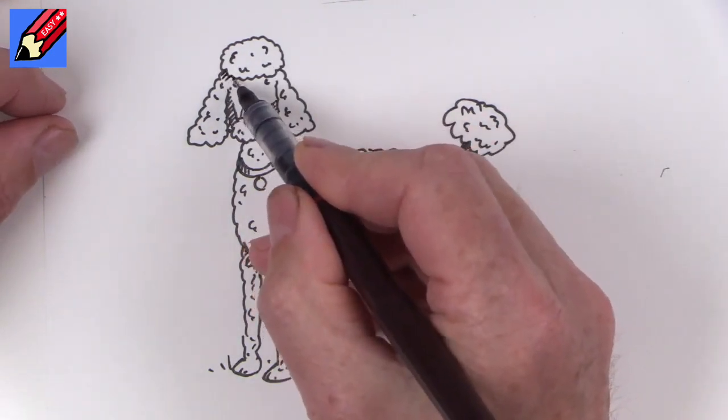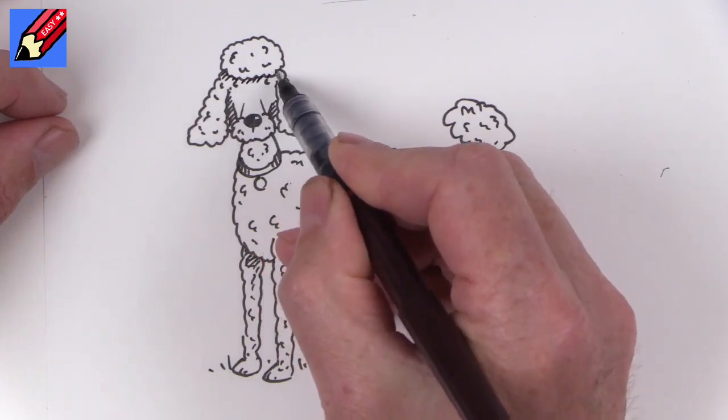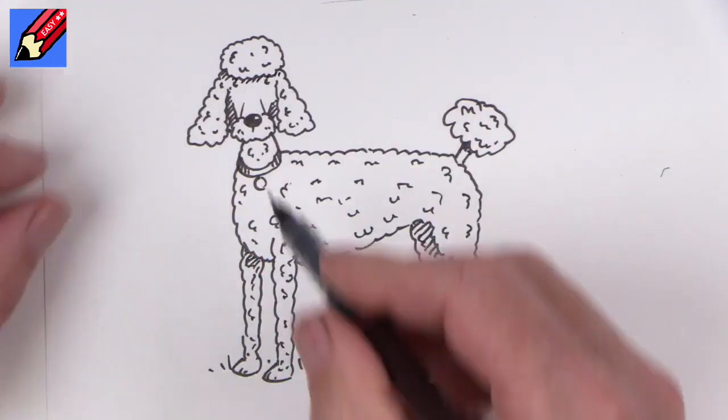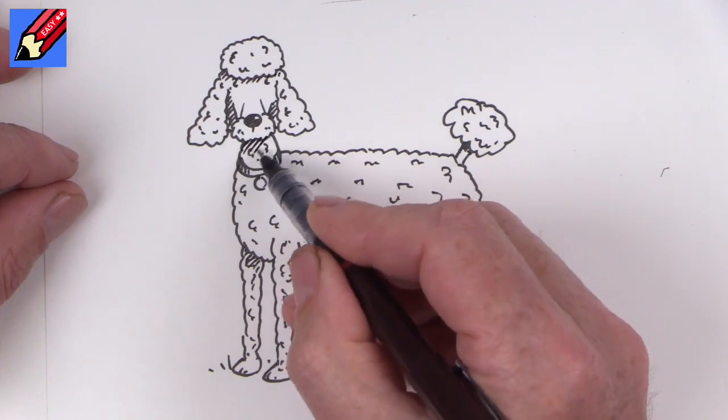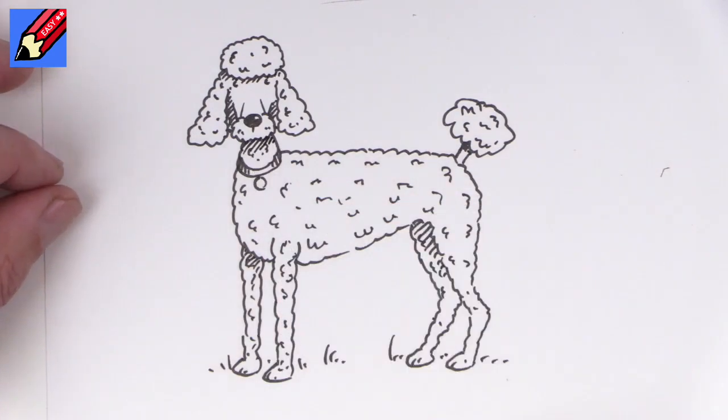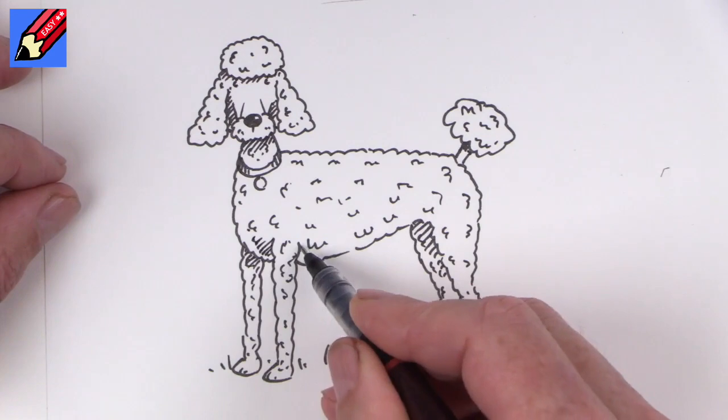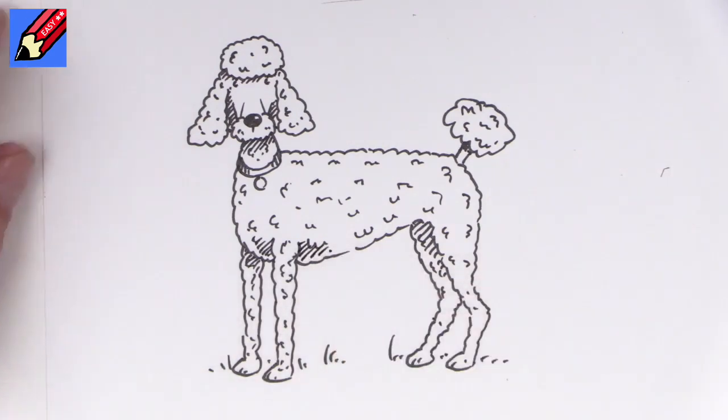And maybe a little bit of shading just underneath that little headdress and underneath on the neck just there. Once you start shading, you can't stop. So I'm going to put a bit in there as well. There we are.